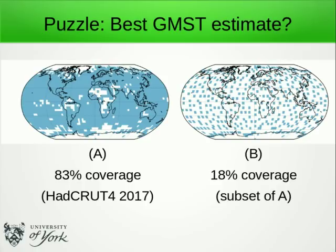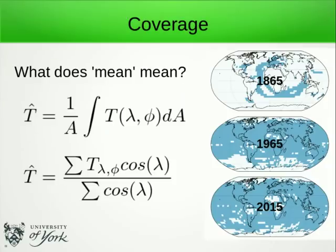Now if you can't give a statistical explanation for why the right answer might be B, then you can probably learn something from this lecture. Okay, so let's think about the word 'mean'.